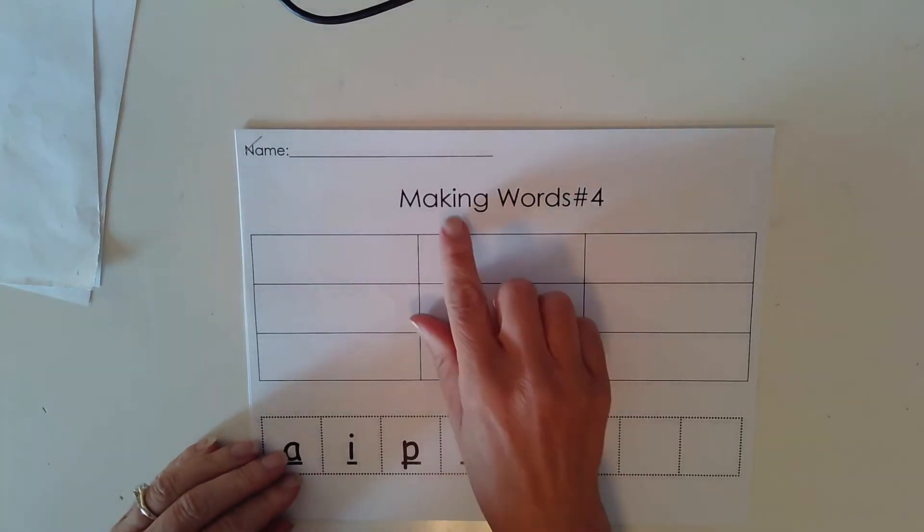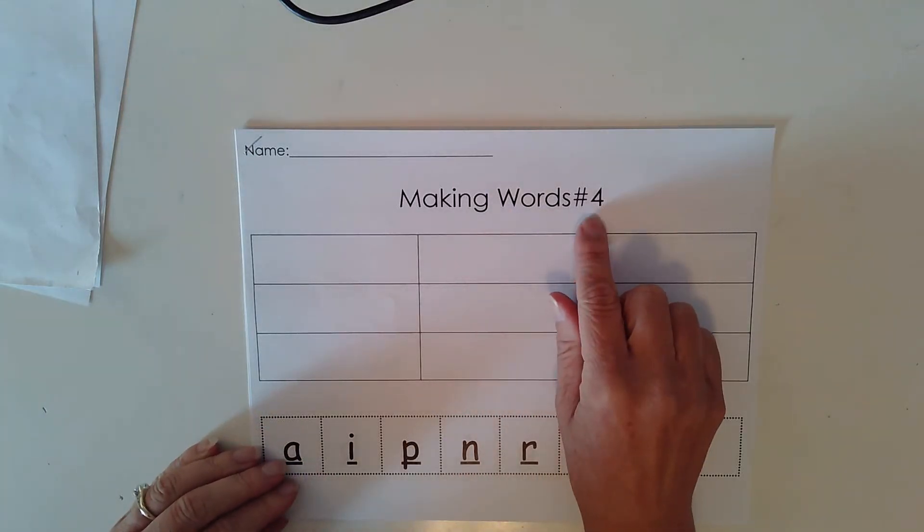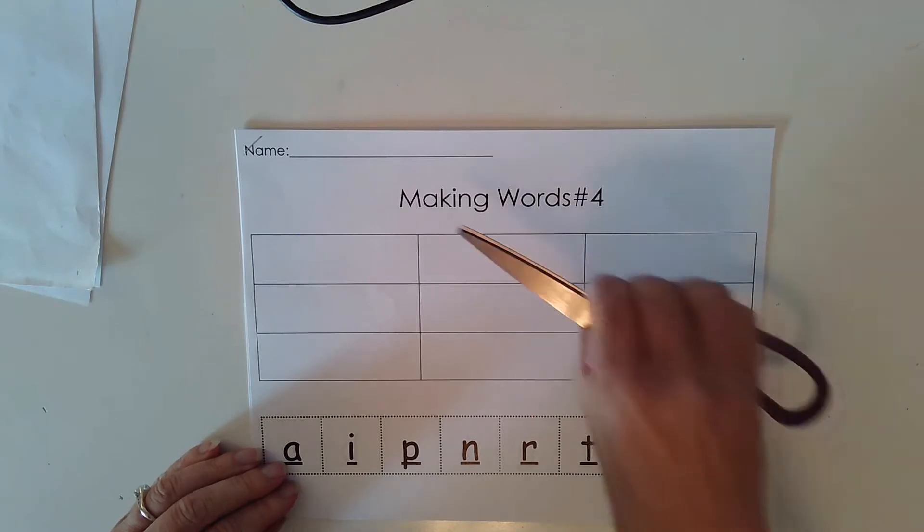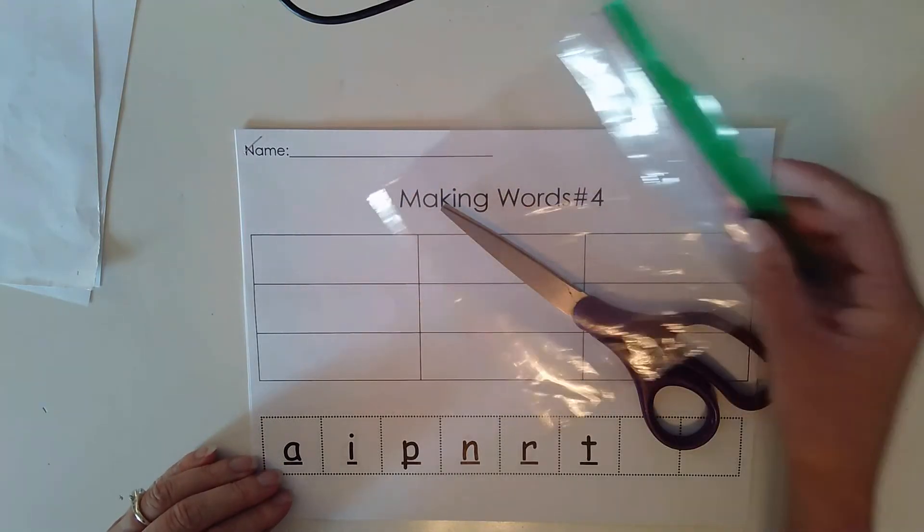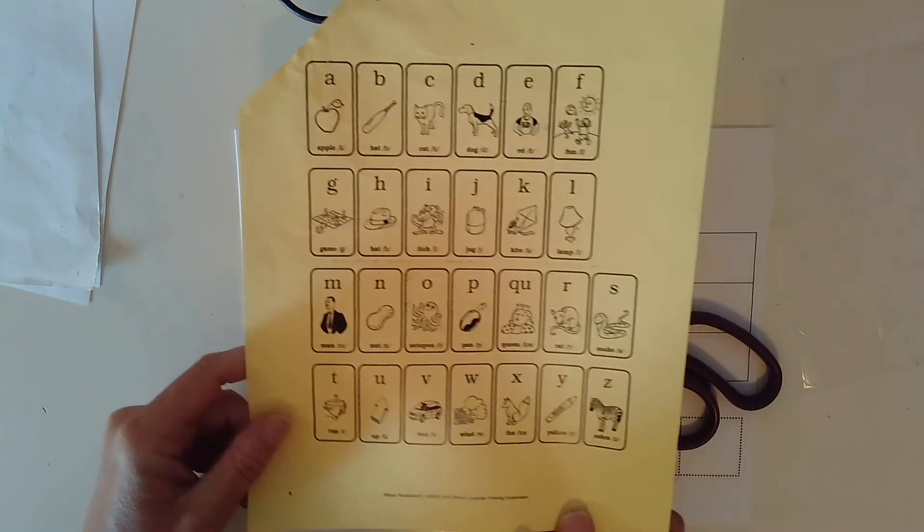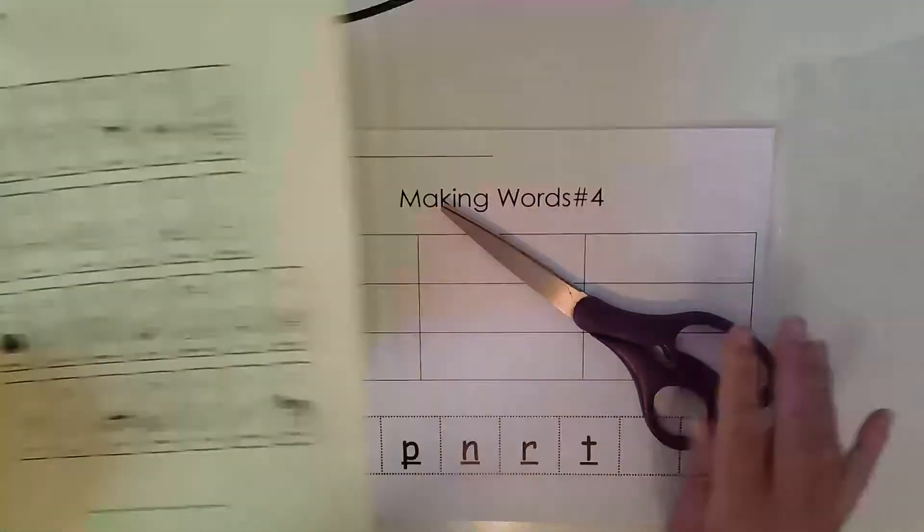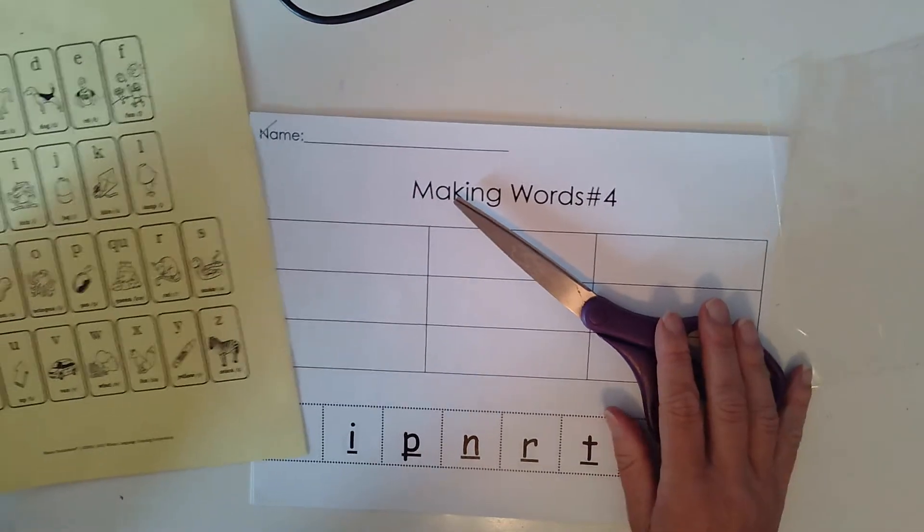For today's lesson, you need your making words work mat number four, some scissors, and eventually you'll need your bag to put your letters in, and you may want your alphabet reference sheet. So gather your supplies and then come on back.